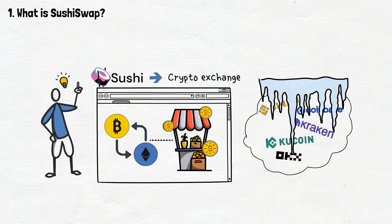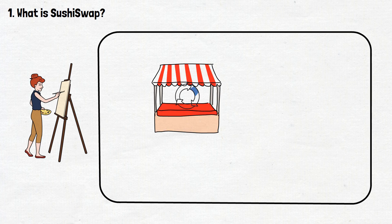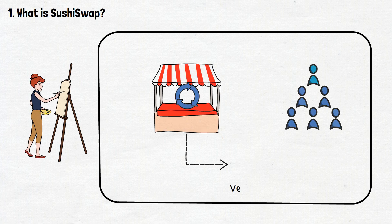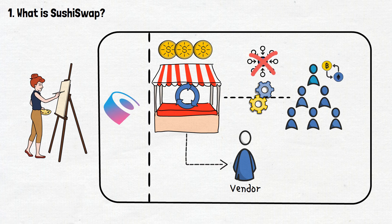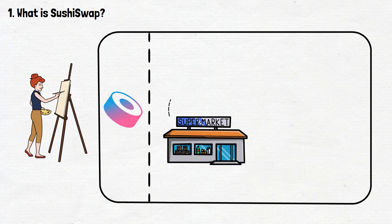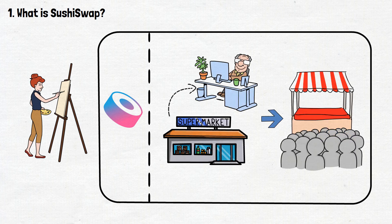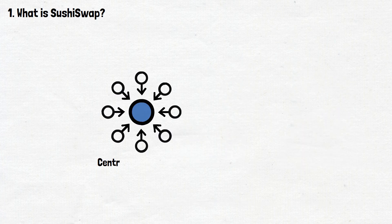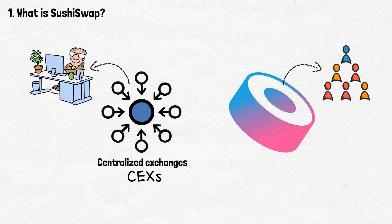What sets Sushi apart from traditional exchanges is its decentralized nature. Imagine you're in a bustling market where vendors are swapping different items. In this market, each vendor is a user and the items are various cryptocurrencies. The market operates without a central authority overseeing every trade — and that's the essence of SushiSwap. Unlike centralized exchanges where a central authority controls everything, Sushi is more of a community-driven organization.